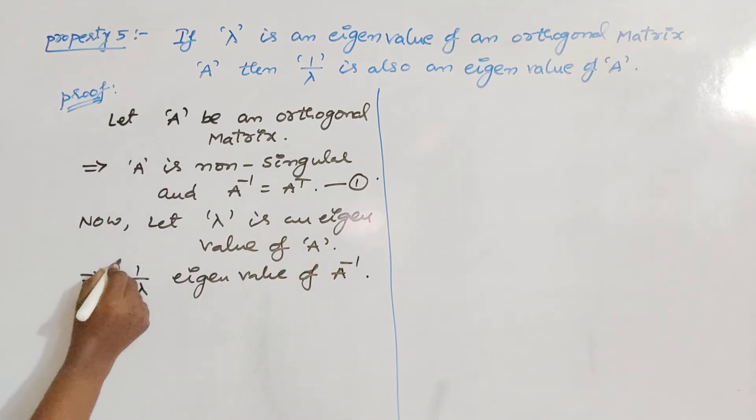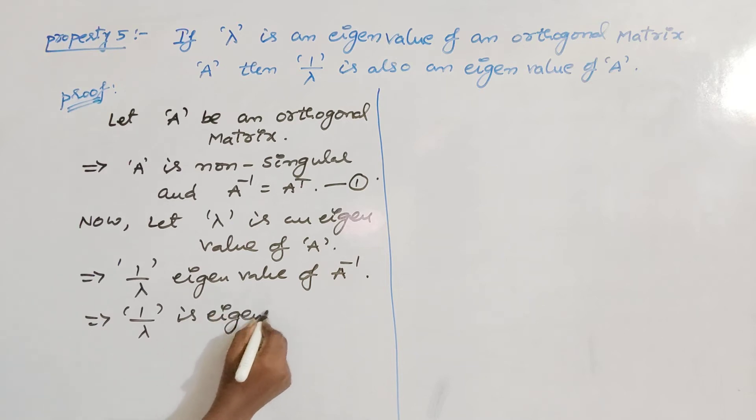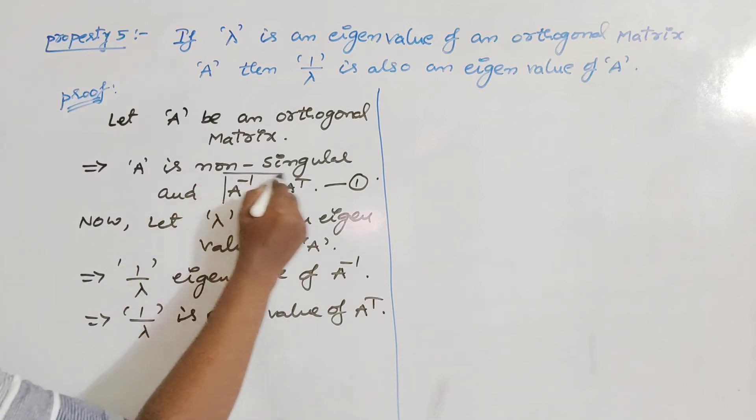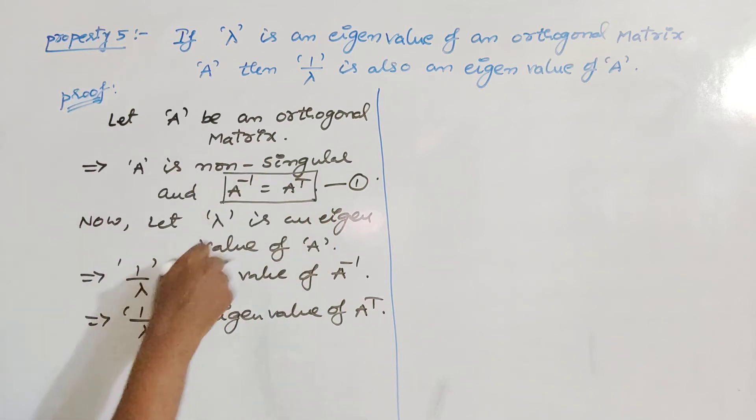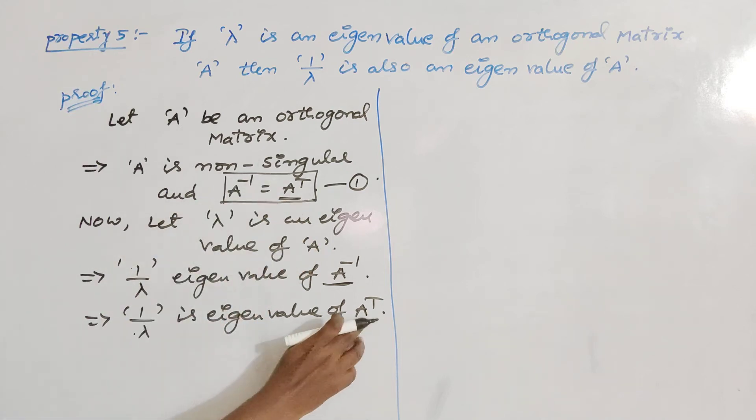So 1 by lambda is eigenvalue of A transpose because from equation number 1, A inverse and A transpose are same. If 1 by lambda is the eigenvalue of A inverse, automatically 1 by lambda becomes eigenvalue of A transpose also.